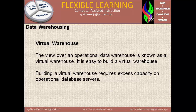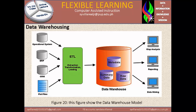Figure 20 shows the data warehouse model. We have operational data, ERP, CRM, flat files going through Extract, Transform and Load (ETL), then metadata, summary data, and raw data are stored in the data warehouse. After the data warehouse, we have data mining, reporting, and OLAP analysis.